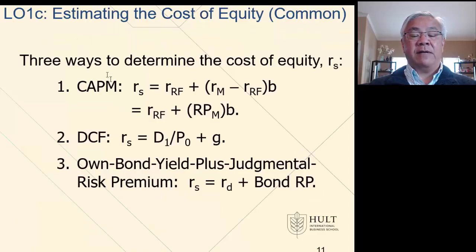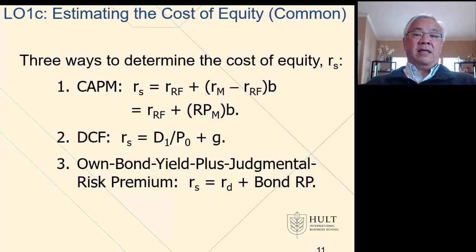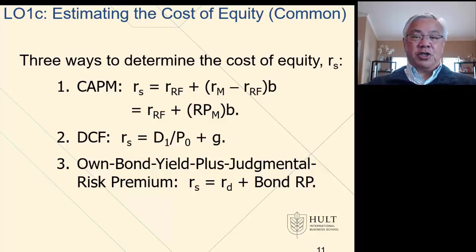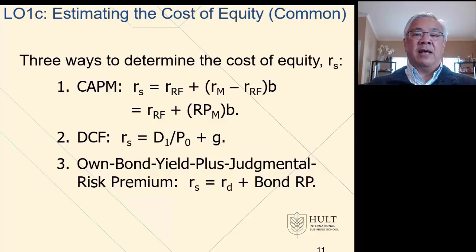Next, we can look at the cost of equity. The cost of equity has three methods: the capital asset pricing model, the second is the DCF formula or dividend discount method, and third is your own bond yield plus some judgmental risk premium — recognizing that bondholders get a certain return fairly easily determined by yield to maturity, and then we add a premium that shareholders would expect to be common shareholders rather than debt holders.